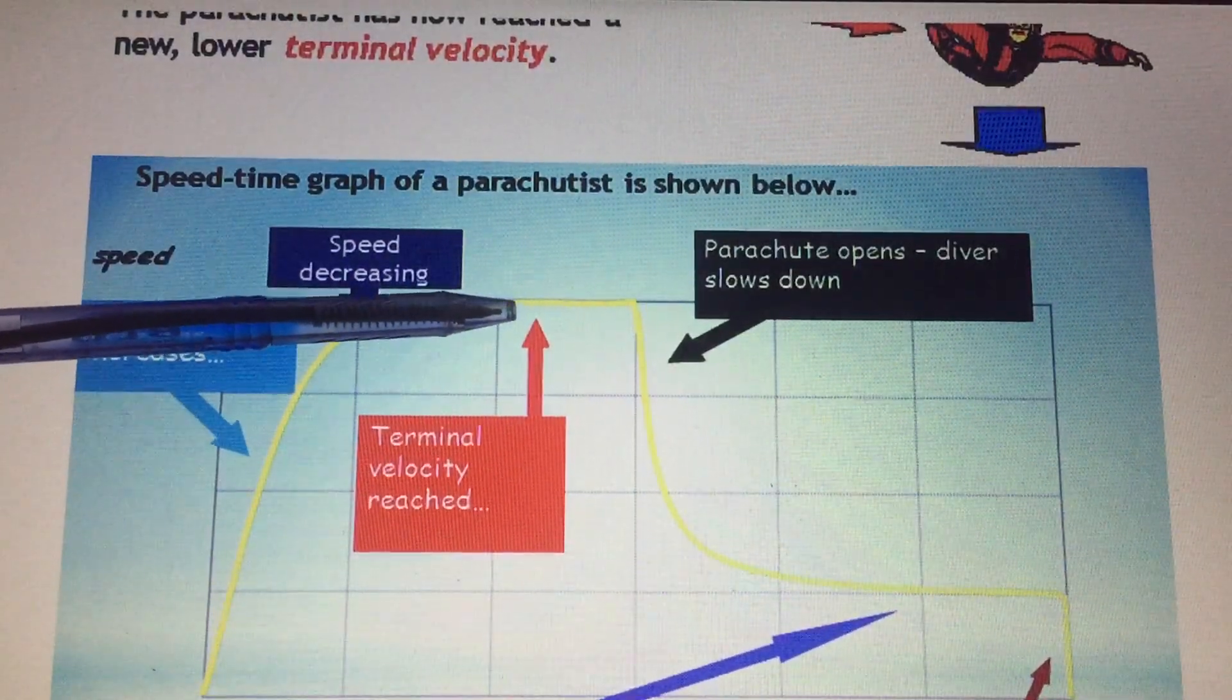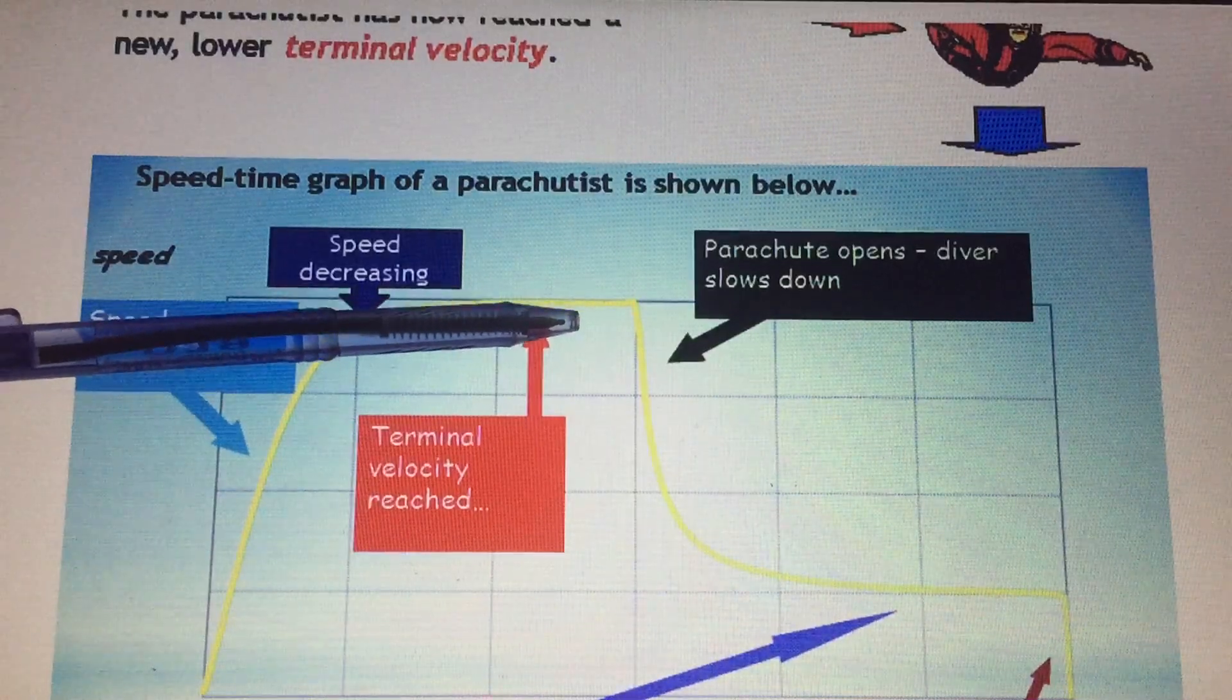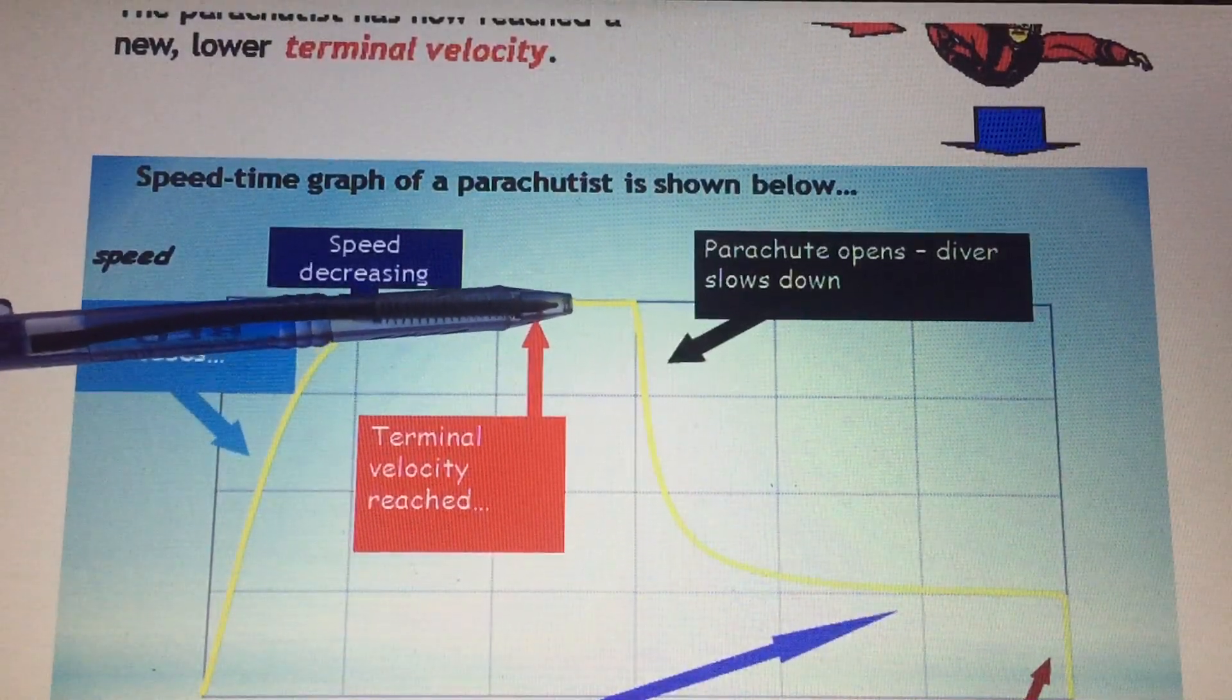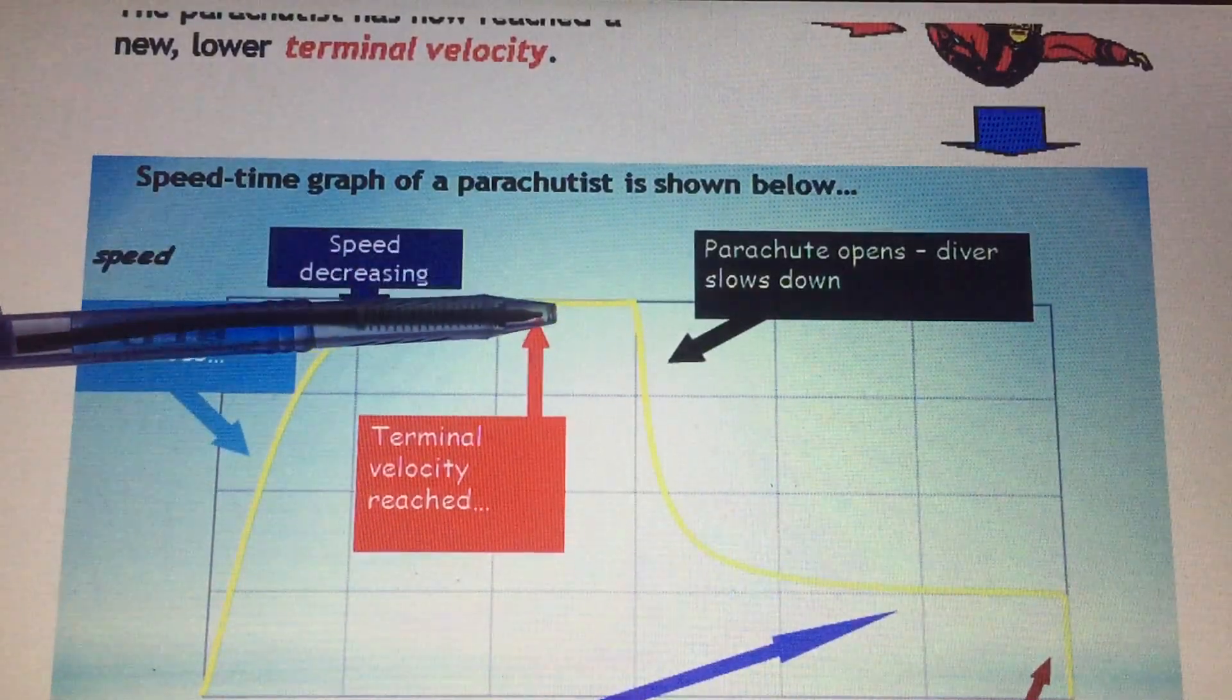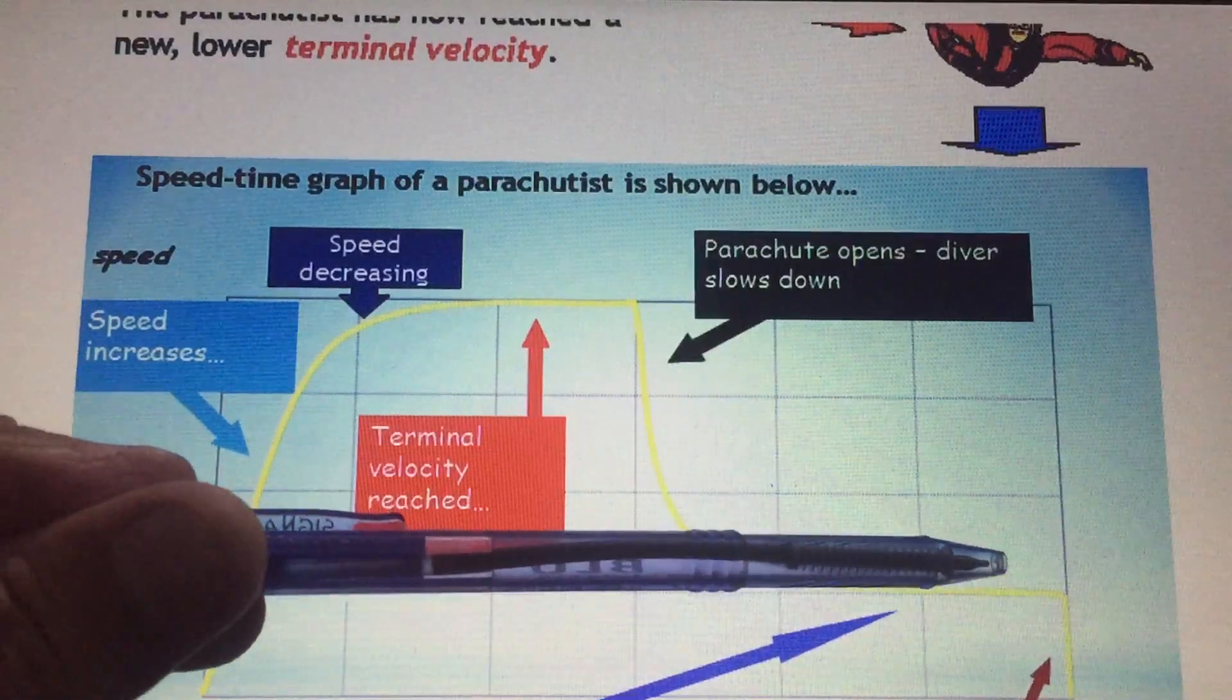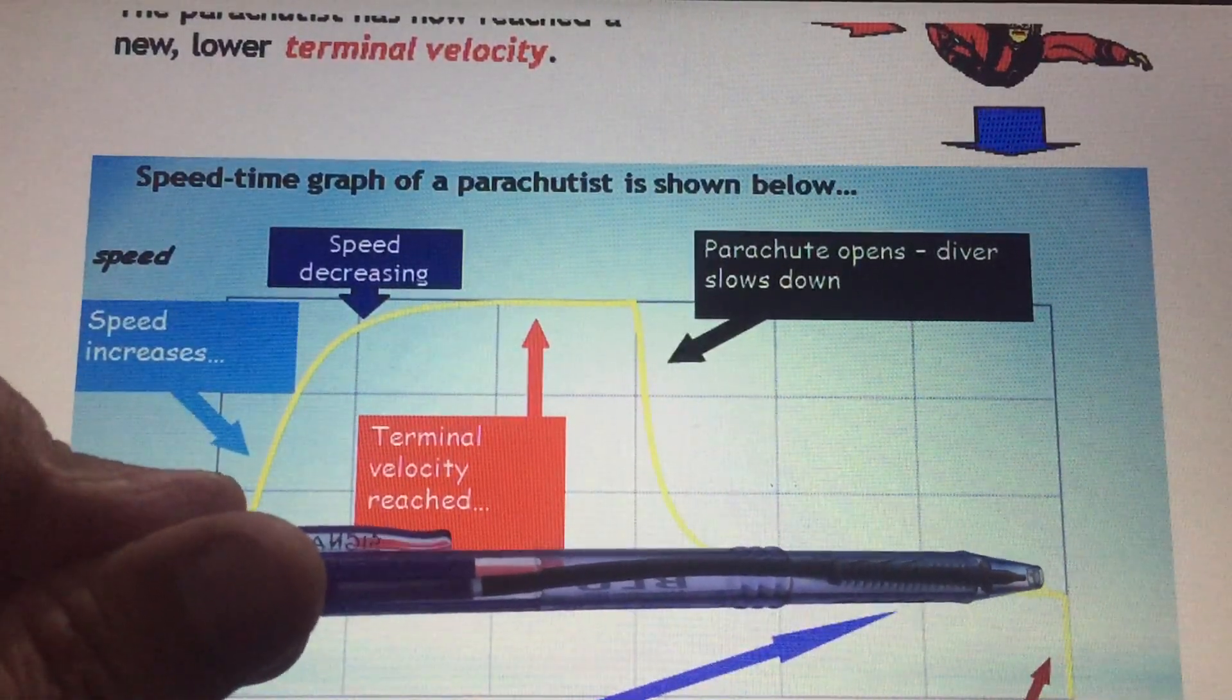The first terminal velocity is constant but very high. If the parachutist falls to the ground at this velocity, it will be very dangerous. But when the parachute opens, the terminal velocity becomes very low, so they can fall smoothly to the ground.